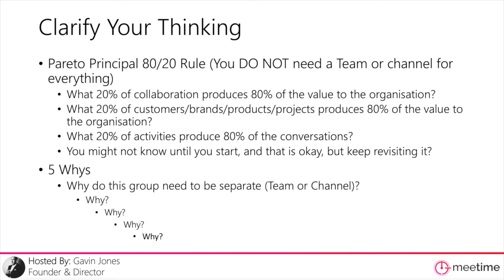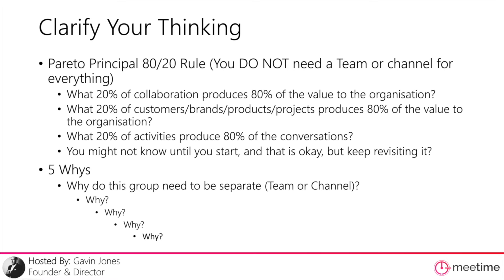The surface level reason might sound valid, but diving deeper you might find another root cause — you're actually doing a process you don't even need to do. It might be bureaucracy or red tape that you can just cut out. Those two models — the 80/20 rule and five whys — might help you improve your business processes before you put a structure and some technology around it.